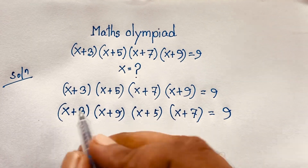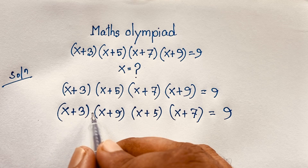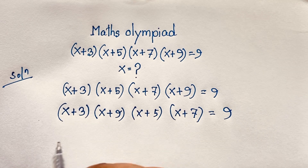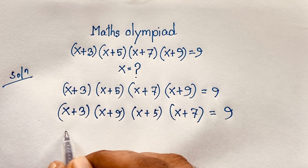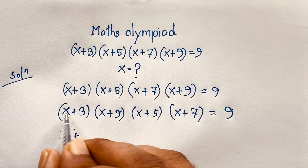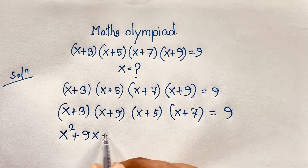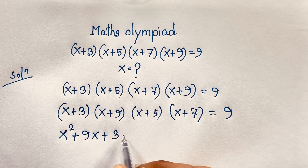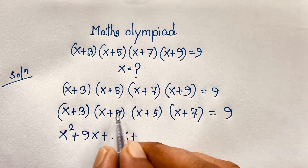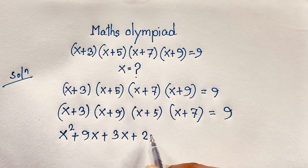So if I multiply (x+3)(x+9): x times x gives x squared, x times 9 gives 9x, 3 times x gives 3x, and 3 times 9 gives 27. So that product is x² + 12x + 27.